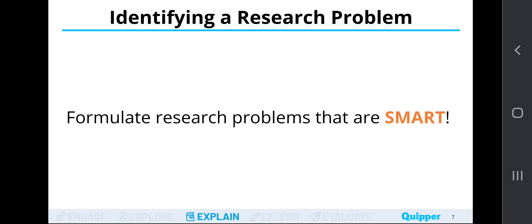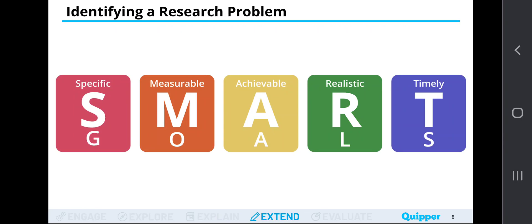Now, we also need to formulate research problems that are SMART. What's the meaning of the abbreviation SMART? Of course, we have the specific, measurable, achievable, realistic, and timely. Always remember that your research problem will be needing a solution eventually in the conduct of your research study. Always keep in mind that your solutions must follow SMART goals. Specific, measurable, achievable, realistic, and timely goals.